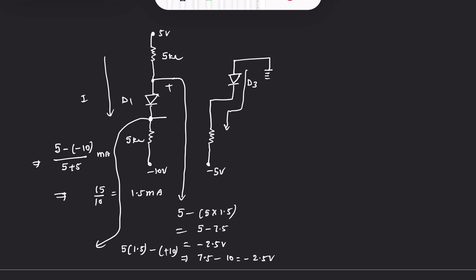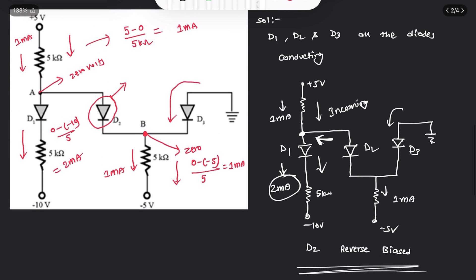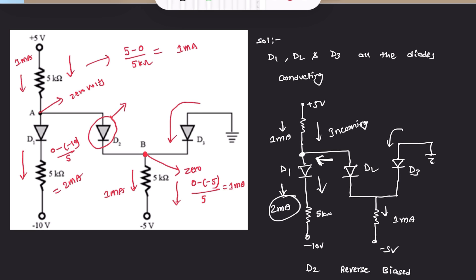For diode D3, the current is zero minus (-5) over 5 kΩ, which is 1 milliampere. All 5 volts drops across the 5 kΩ resistor since 5 kΩ × 1 mA = 5 V. This confirms D3 is in forward biased mode, and the voltage drop across the ideal diode is zero as expected.